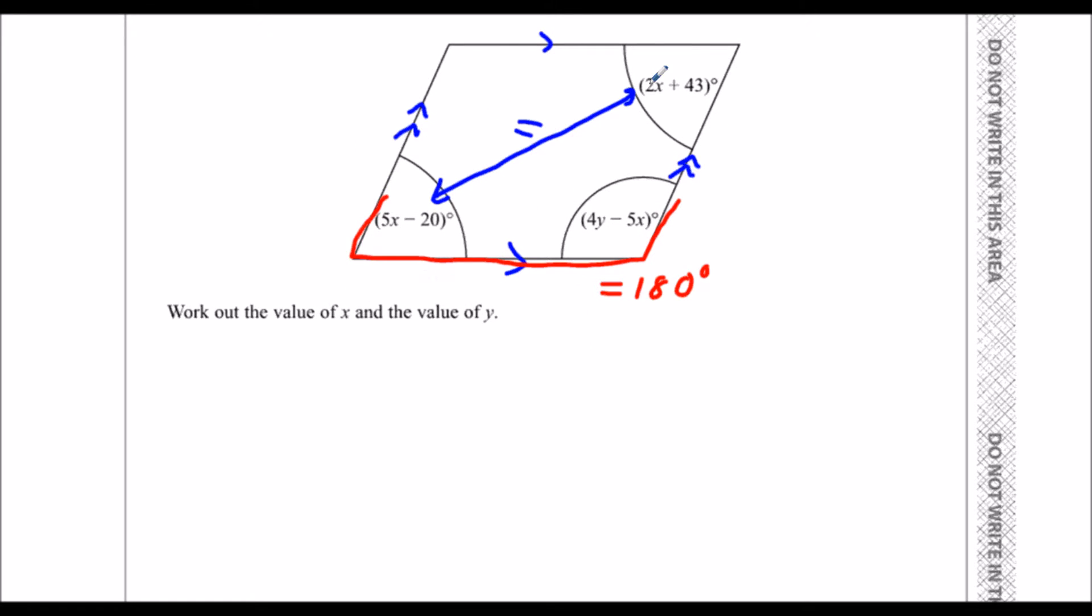So we're going to do this blue one first. We're going to say 5x minus 20 is equal to 2x plus 43.